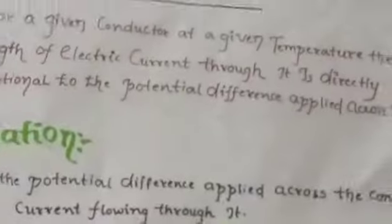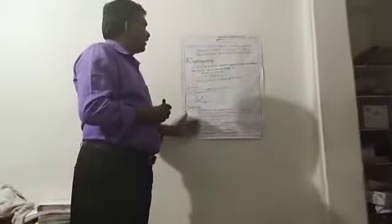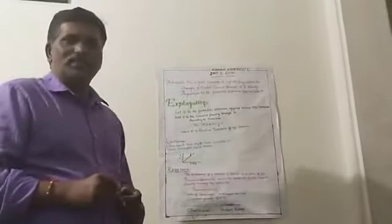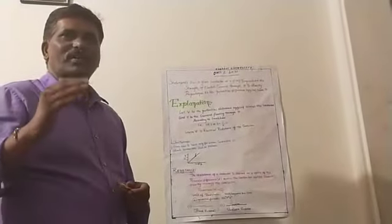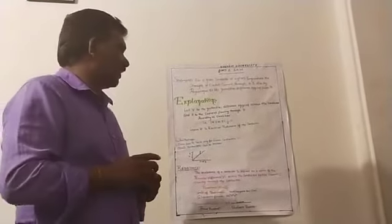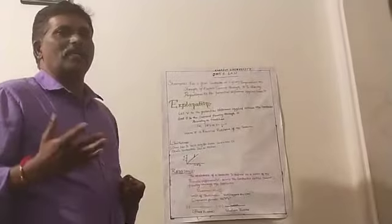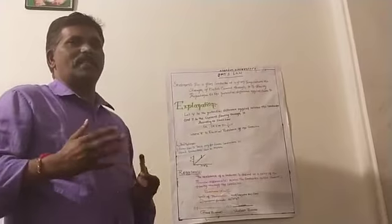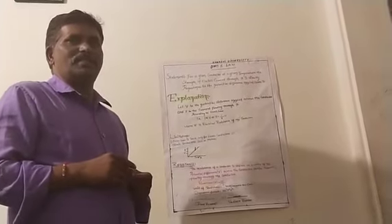So this covers Ohm's law, its limitations, resistance and its units, and the types of resistors. Are you understood this lesson? Yes sir. Next time we will come with another topic and discuss clearly.